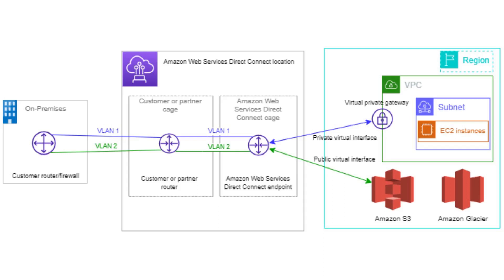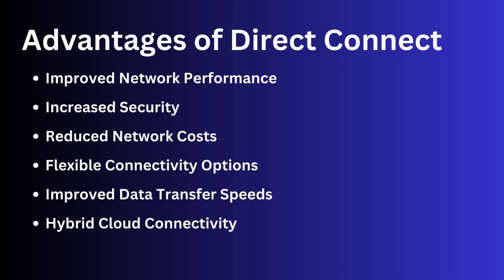AWS Direct Connect offers a reliable and secure way to connect your on-premises infrastructure to AWS services while bypassing the public internet. This can help improve performance, reduce latency, and provide a more consistent network experience. AWS Direct Connect offers several advantages over traditional internet-based connections. Improved network performance: Direct Connect can provide lower latency and more consistent network performance, which is especially important for real-time applications and large data transfers.